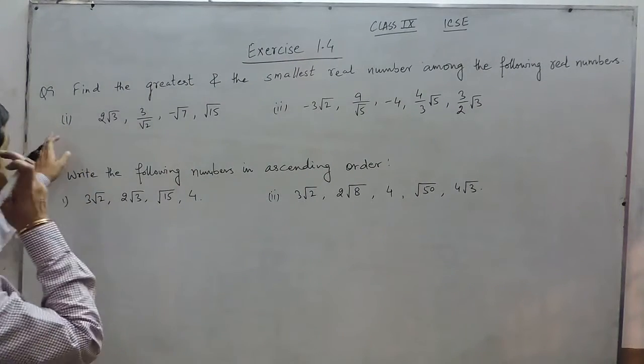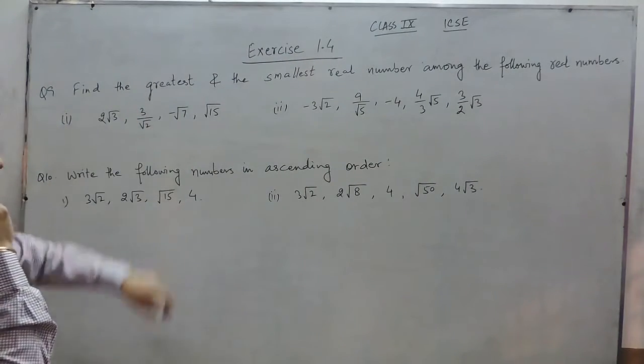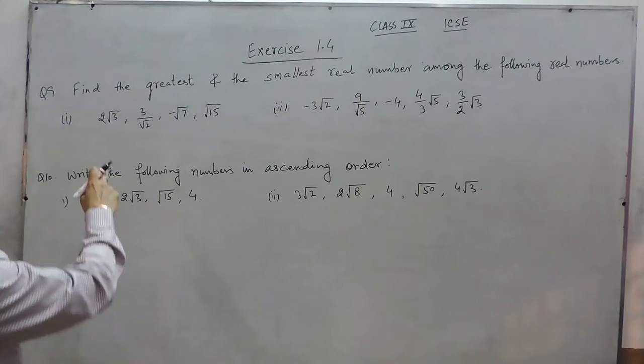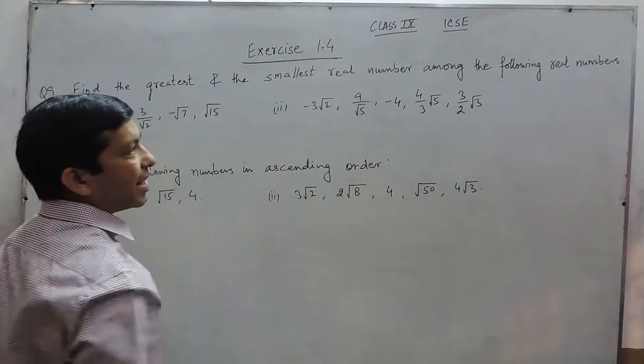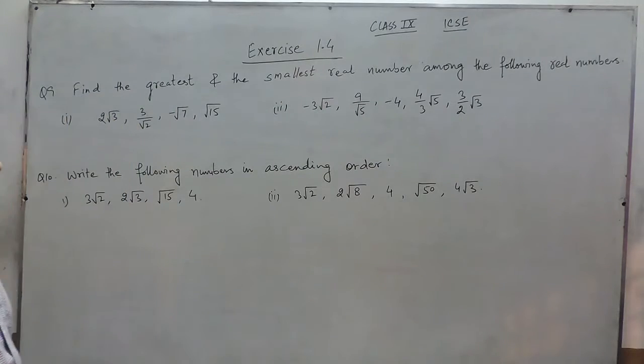Hello everyone. Question number 9 of exercise 1.4: find the greatest and the smallest real number among the following real numbers.